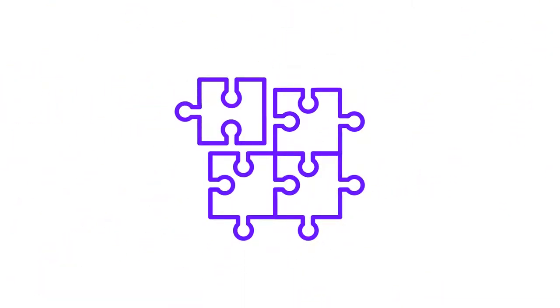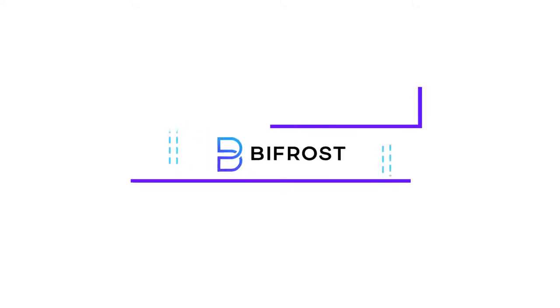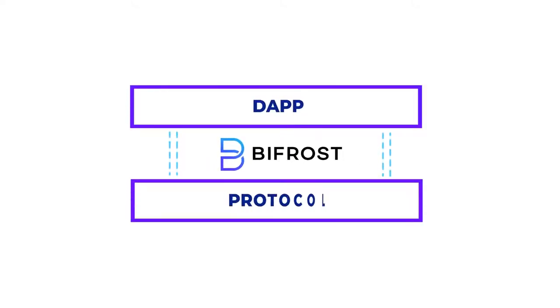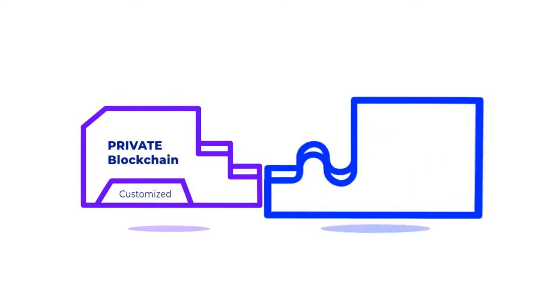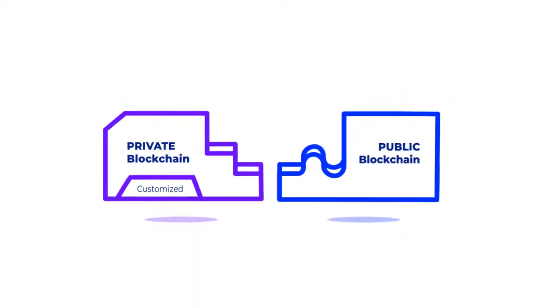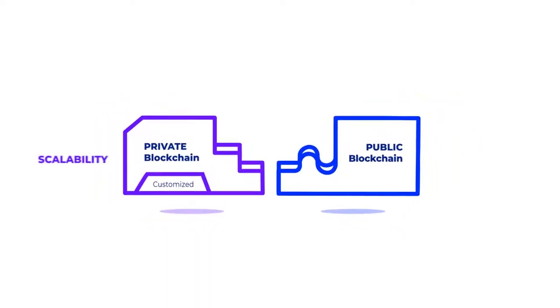More importantly, there's always a serious mismatch between dApps and blockchain protocols. dApps always have to deal with the problems the blockchain has. That's where Bifrost comes in. Bifrost solves this platform risk by creating a middleware bridging dApps and blockchain protocols. We are combining private and public blockchains. The private blockchain can be tuned up however you want, which leads to enhanced scalability, and the public blockchain gives you safety and decentralization.